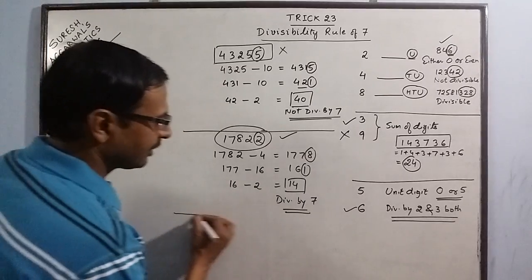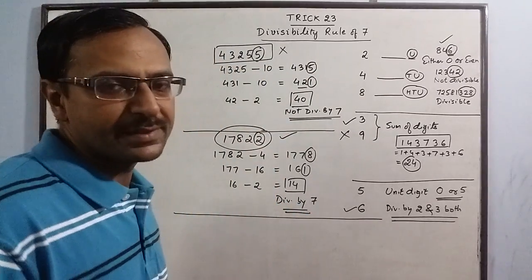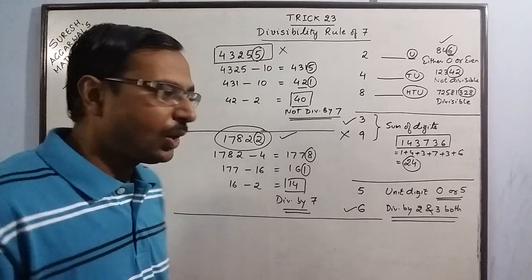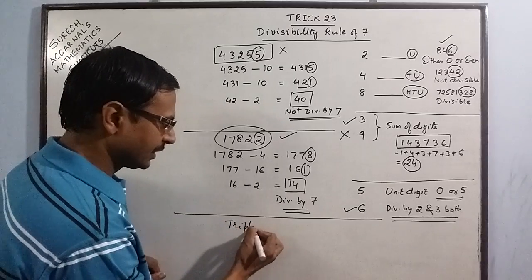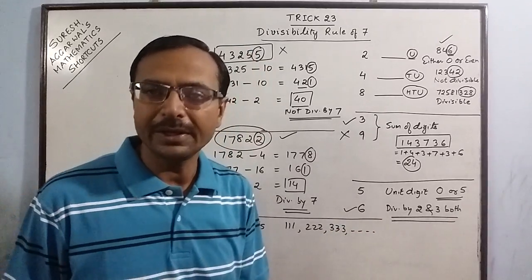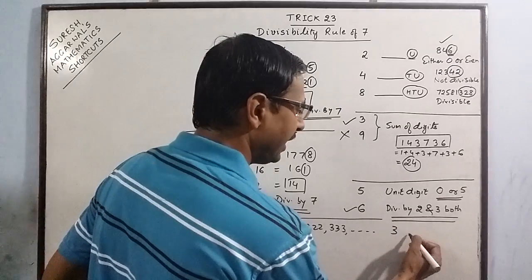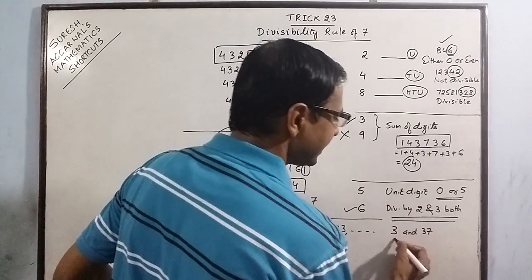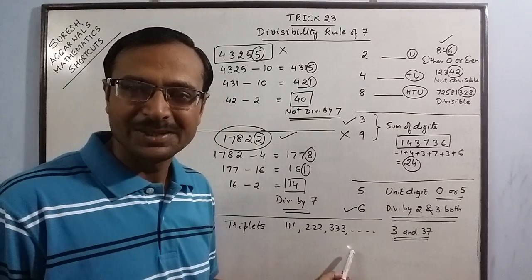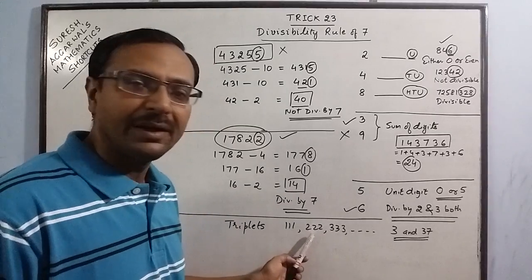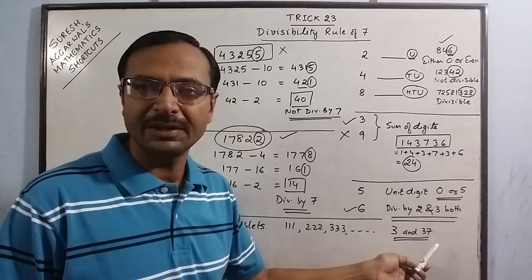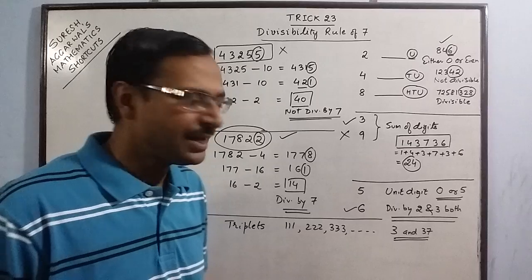So this completes our module on divisibility rules of all single digits. One or two very interesting facts in divisibility: all the triplets, like triple 1, triple 2, triple 3, etc., all the triplets are divisible by 3 and 37. These are the two essential factors of all triplets. So whenever you confront a triple digit repeating digit, we can blindly write the factors as 3 and 37, plus we may have some more factors also.